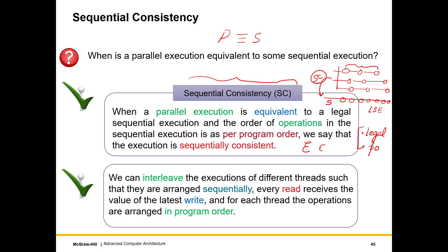If it is possible to convert a parallel execution into such a sequential execution with these two properties — it is legal and for every thread the operations appear in program order — then we say the parallel execution is sequentially consistent, or it is an SC execution. We can say the execution is an element of SC, meaning it is possible to take a parallel execution and sequentialize it in this manner. We can visualize this differently: we are taking operations issued by different threads and creating a sequential interleaving.